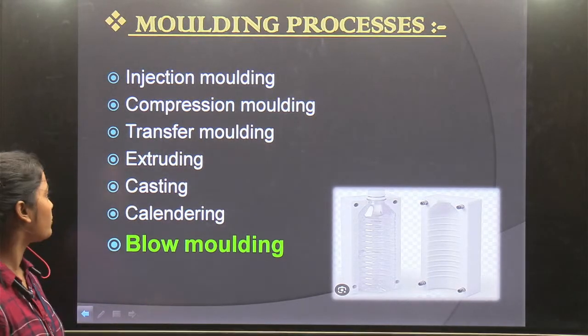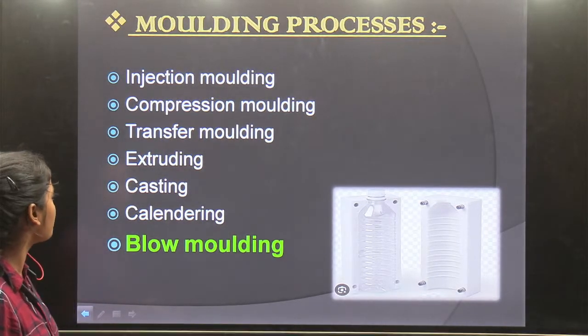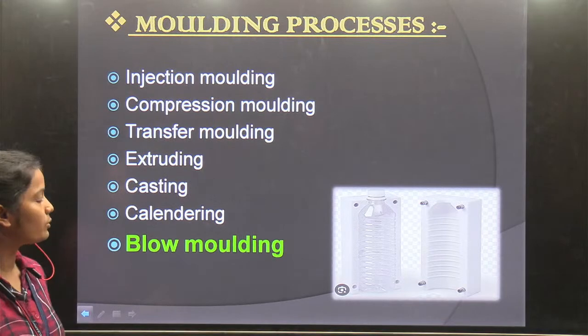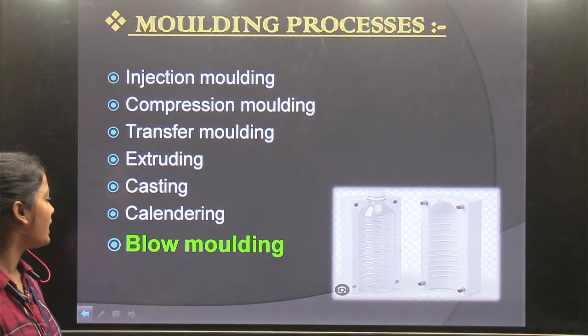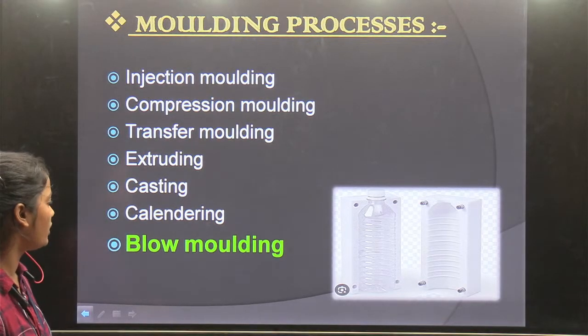The 7 types are: injection molding, formation molding, transport molding, distributing, casting, rendering, and blow molding.